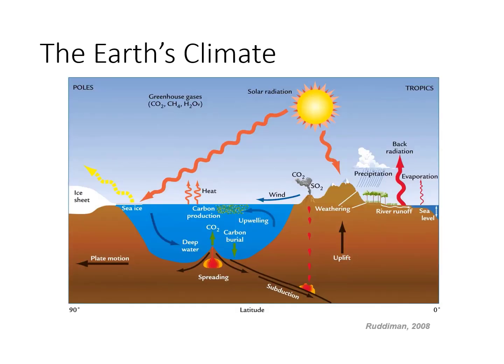As this image shows, energy and matter flow between spheres through many processes that create a complex web of connections between the spheres. Because of the cycles and complex web of interactions, the global climate system is also complex and can respond non-linearly to forcings.